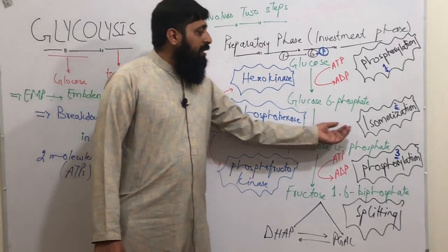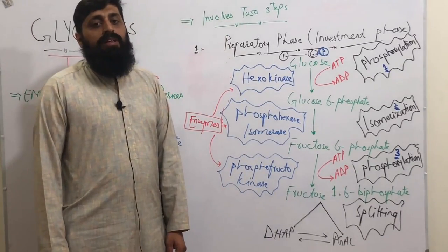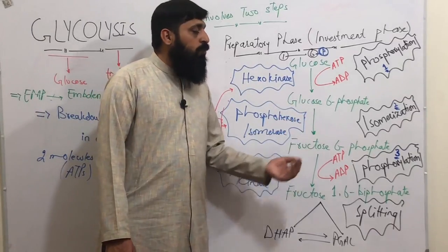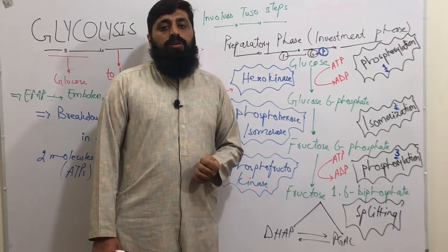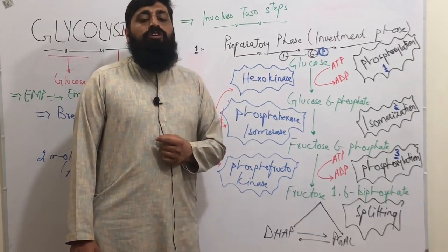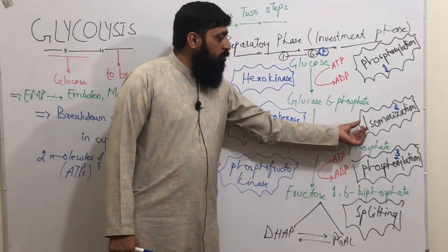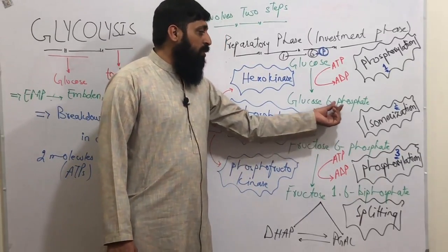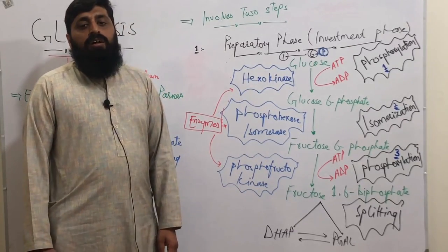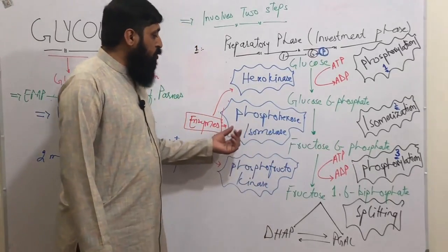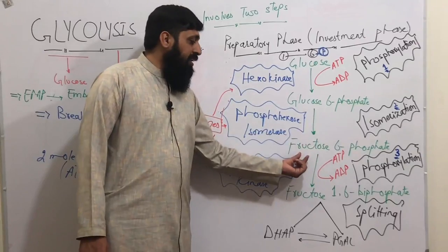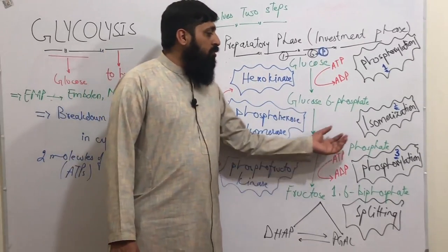The second step is isomerization — the formation of an isomer. The isomer of glucose, as students have read in the biomolecules chapter, is fructose. Fructose has the same number of molecules as glucose, but the shape or structure changes — this is called an isomer. So the second step is isomerization: glucose-6-phosphate, with phosphate still on the sixth carbon, only changes its structure or shape into its isomer called fructose-6-phosphate. The enzyme that helps here is phosphohexose isomerase.